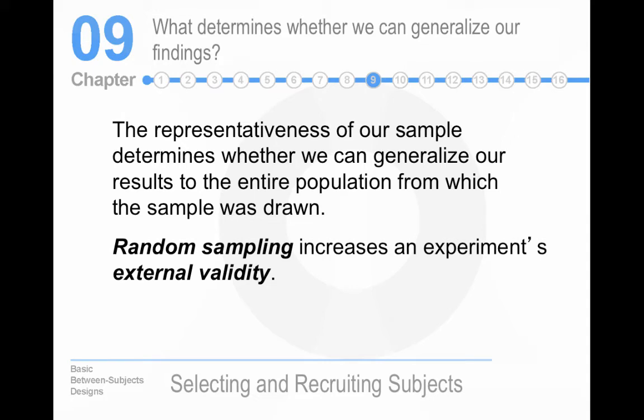What determines whether we can generalize our findings? We like random sampling because it increases the experiment's external validity. Random sampling is getting your sample in such a way that each member of a population has an equal chance of being chosen on any given draw. The classical example of this is an army draft.